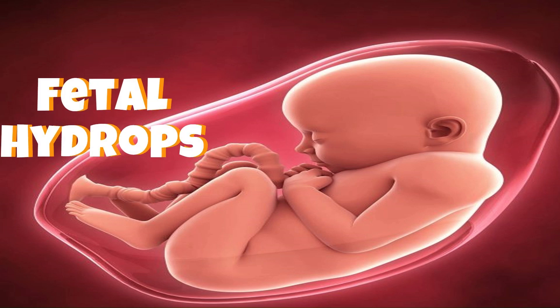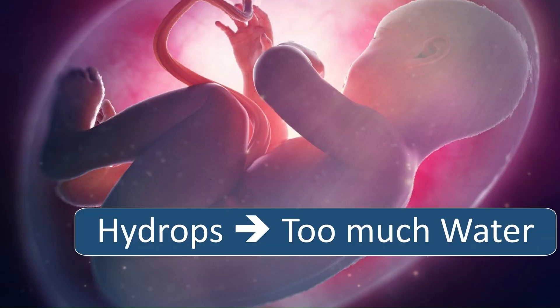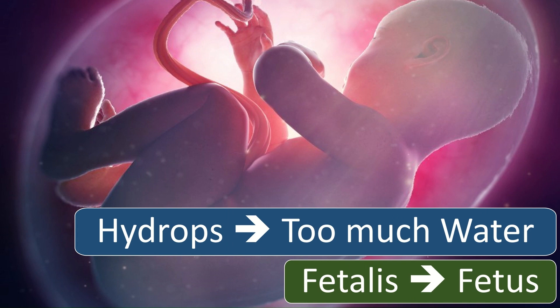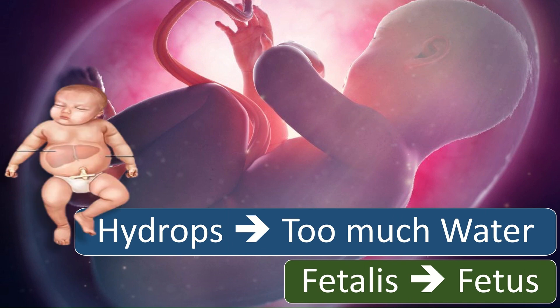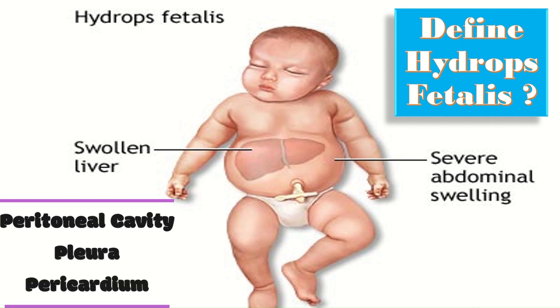Today we will talk about hydrops fetalis. 'Hydro' in Latin means water, 'fetalis' means fetus. Hydrops fetalis means too much water around the baby. It is a serious fetal condition characterized by abnormal interstitial fluid collection in two or more compartments of the fetal body, like the peritoneal cavity, pleura, and pericardium.